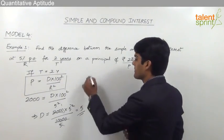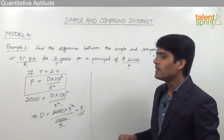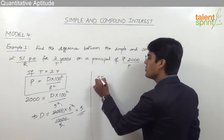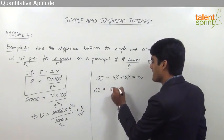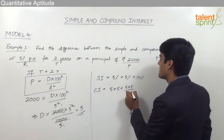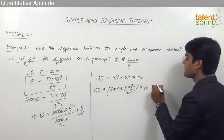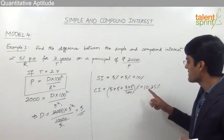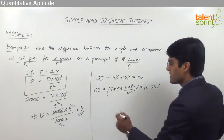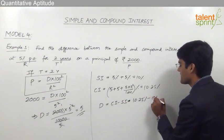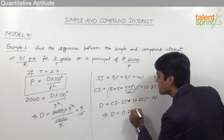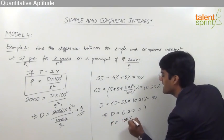Let us now look at the other way of solving this question. If the rate of interest is 5% per annum and the time period is 2 years, the simple interest earned in 2 years would be 5% plus 5% equals 10%, and the compound interest earned would be A plus B plus AB by 100 as an effective percentage. So 5 plus 5 plus 5 into 5 by 100 equals 10.25%. The difference between compound interest and simple interest is 10.25% minus 10%, which is 0.25%, and the principal is 2000.